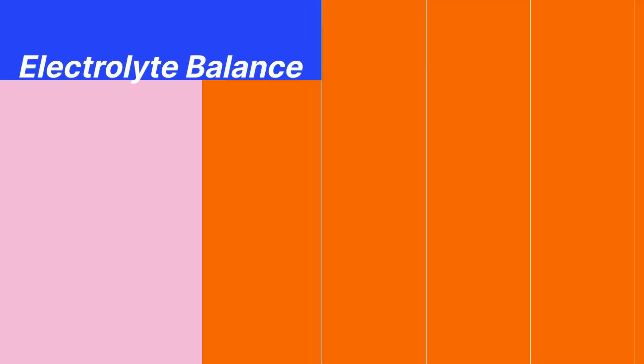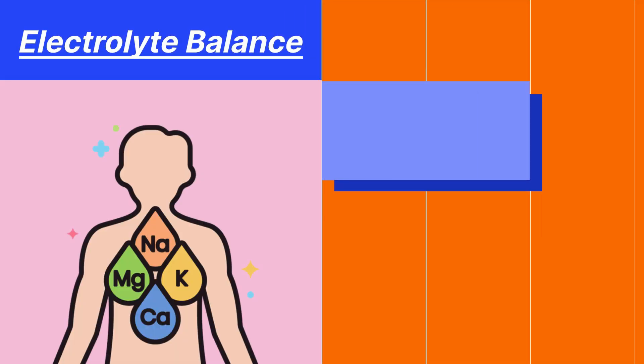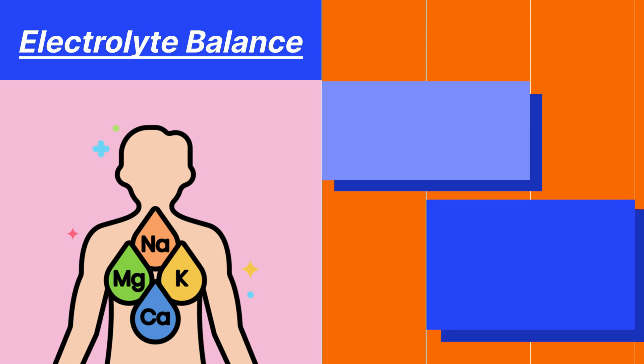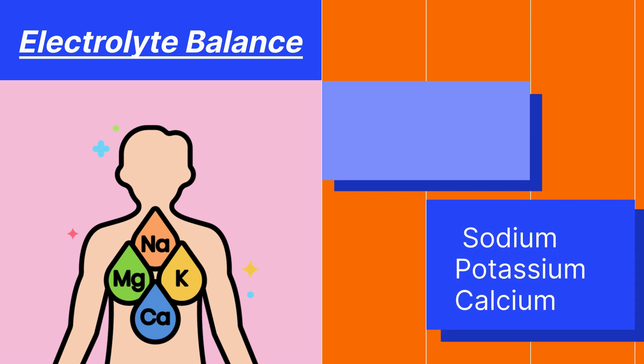Electrolyte balance: the body maintains a constant balance of electrolytes such as sodium, potassium, and calcium. Electrolytes are essential for many bodily functions such as muscle contraction, nerve conduction, and fluid balance.